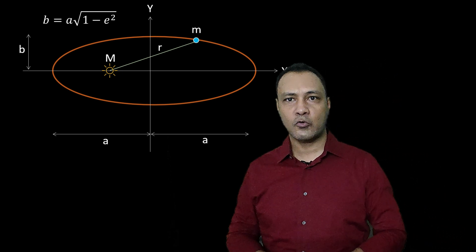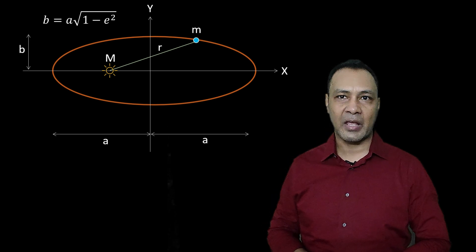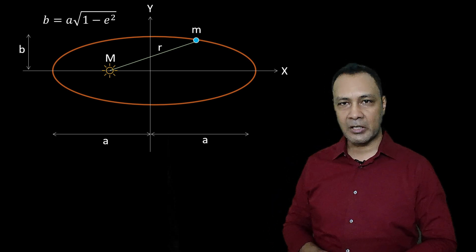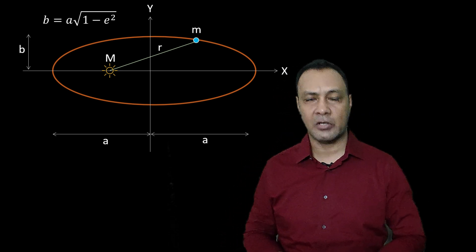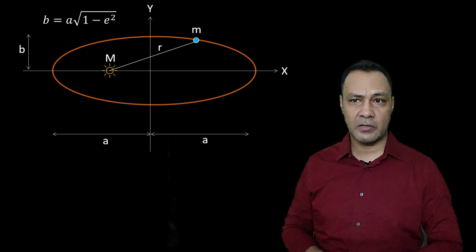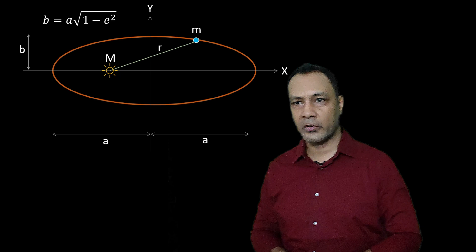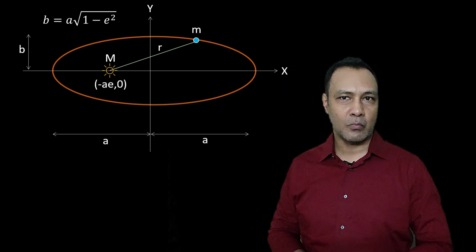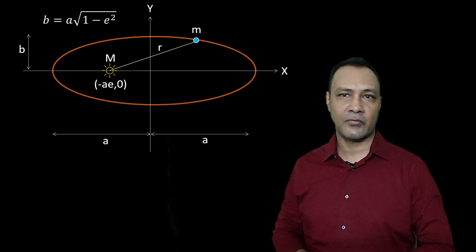The ellipse has two foci. The coordinates of these foci are (Ae, 0) and (−Ae, 0). From Kepler's first law, all planets revolve in an elliptical orbit with the Sun at one of the foci. I have shown the Sun here at the focus. The coordinate of the Sun is (−Ae, 0), meaning the distance of the Sun from the center of the ellipse is Ae.